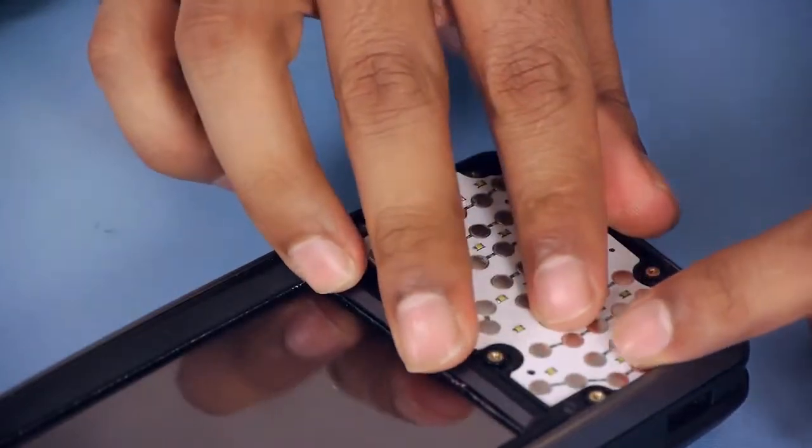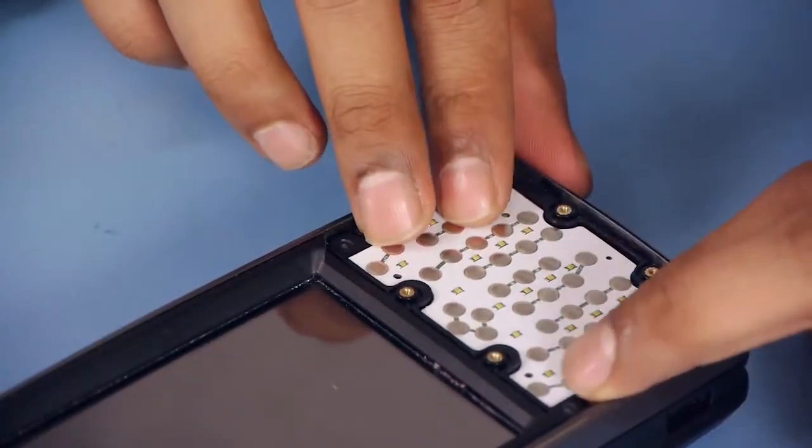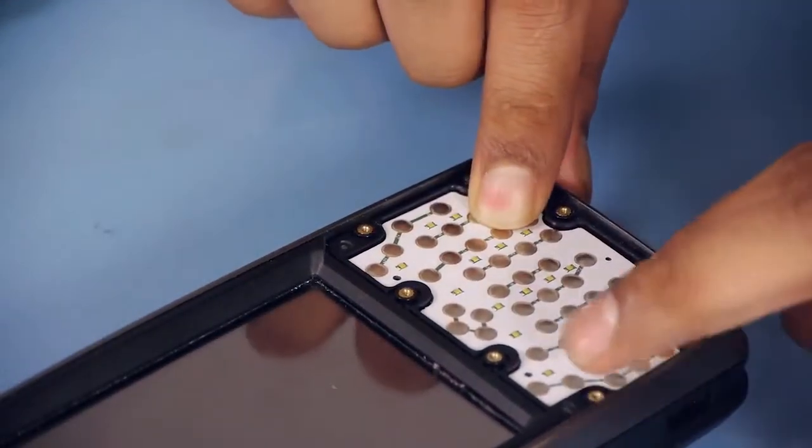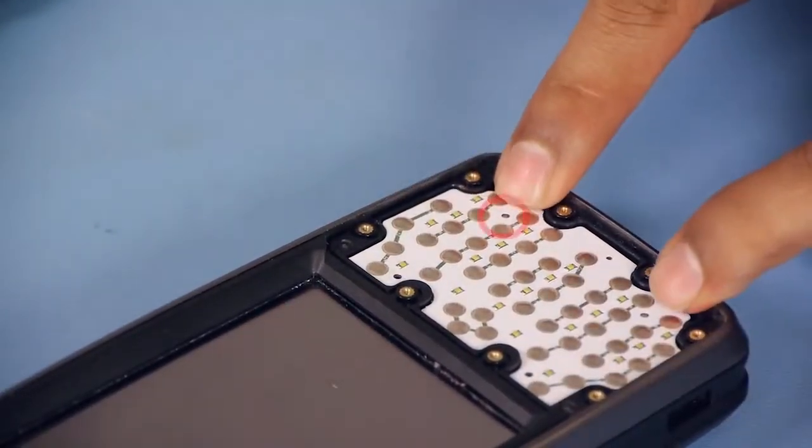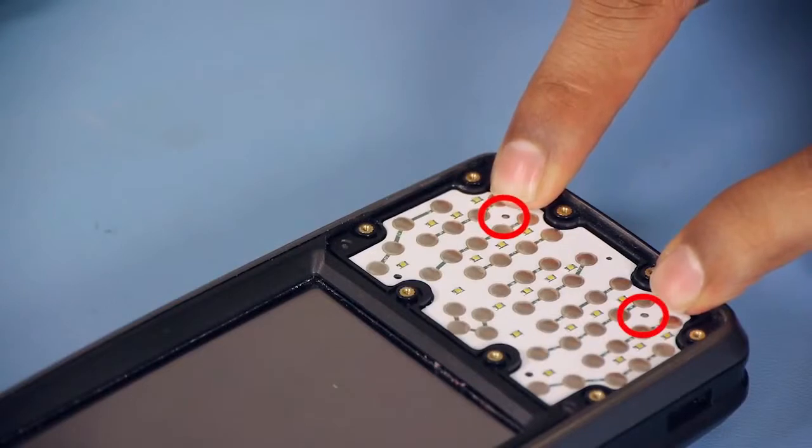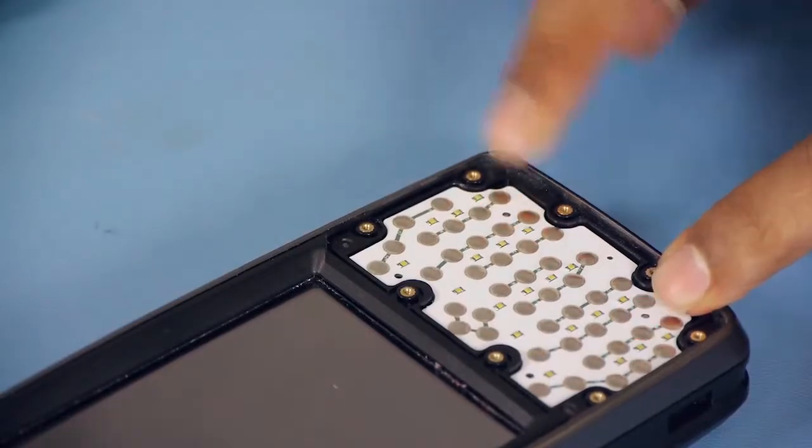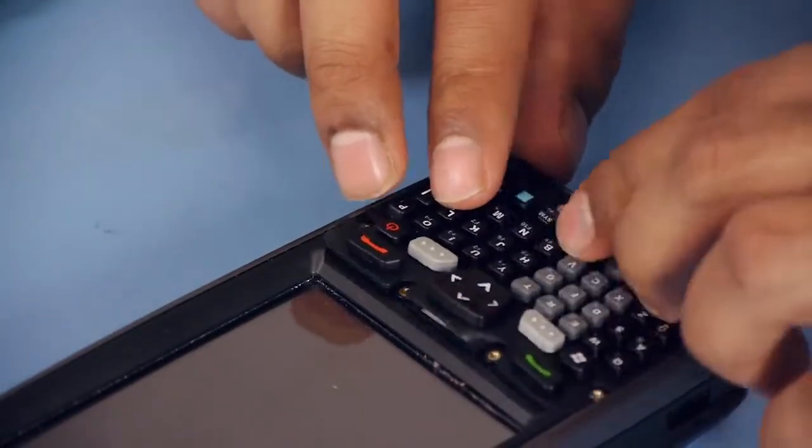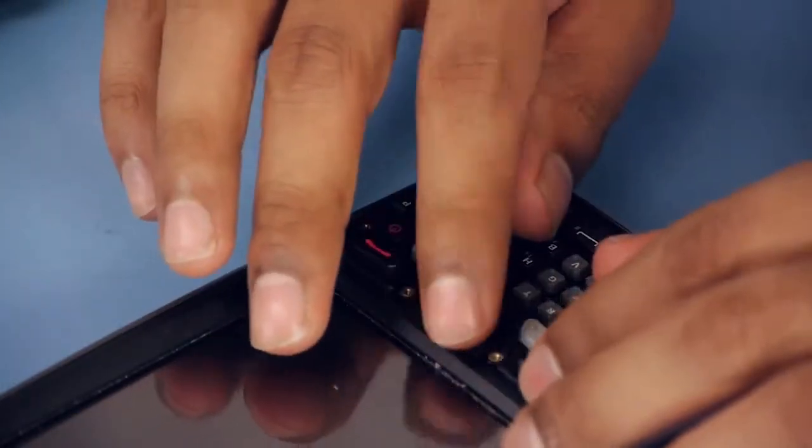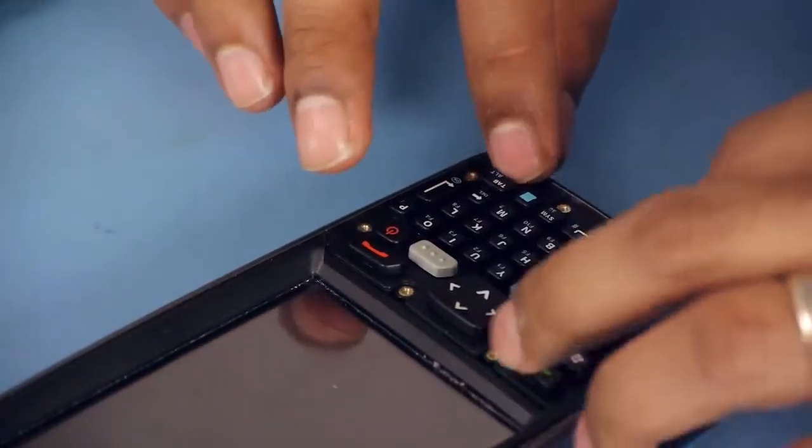And seat the keypad back. And now there are two alignment nibs on the metal frame that need to line up when you install the keypad PCB. Then you're ready to put your QWERTY elastomer back on. Make sure it's not twisted in any area. It has to be flat.